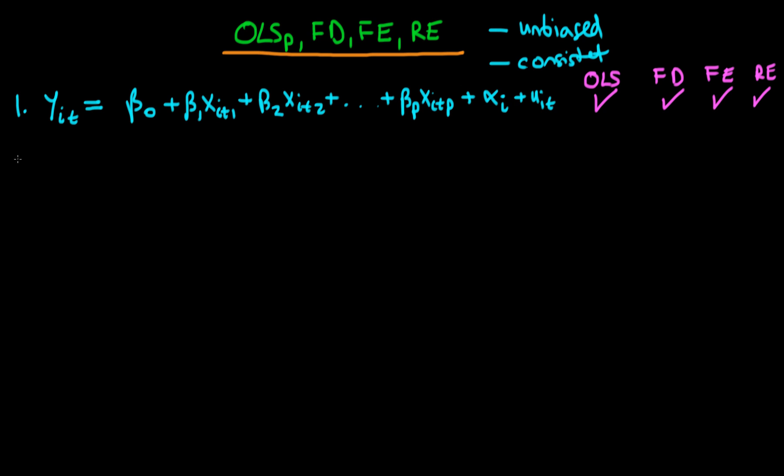Okay, the second assumption that we require is that we have a random sample in terms of the cross-section. So we have a random sample in cross-sections and we require that this is the case for each of the estimators above to have the desired properties.